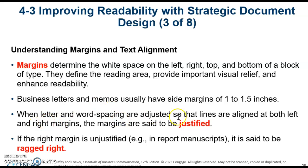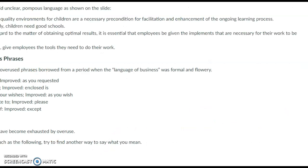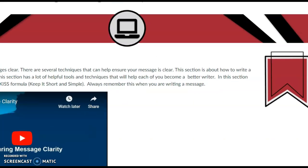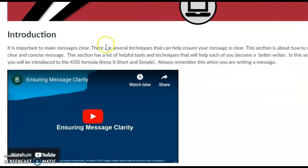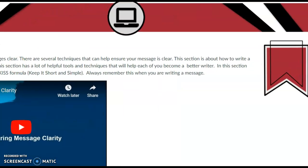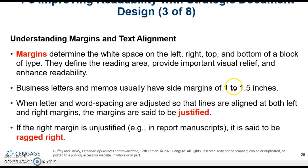Margins are said to be justified when the letter and word spacing are adjusted so that lines are aligned at both left and right margins. In my example, I have the image right-justified and the introduction left-justified so it's organized in a way that's helpful to the reader. If the right margin is unjustified, it's said to be a ragged right, so you want to pay attention to your margins when writing.